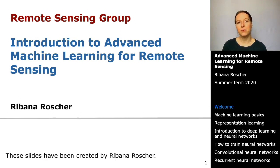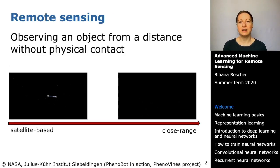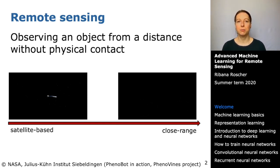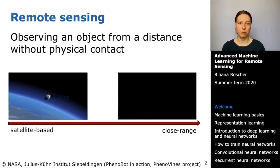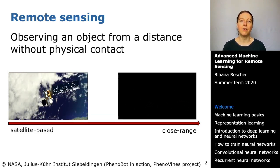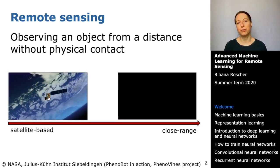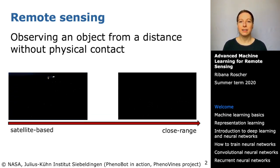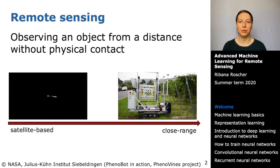This course focuses particularly on remote sensing, and remote sensing is nothing else than observing an object from a distance without physical contact. The most commonly considered area is satellite remote sensing, which means a satellite is actively or passively observing the earth from a distance with different sensor technologies.